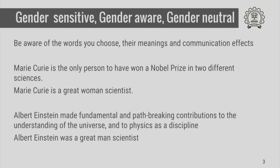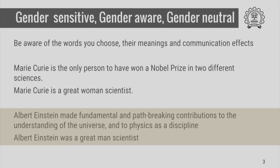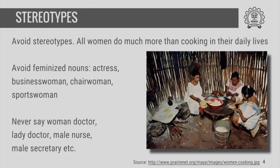Take for example this first sentence referring to Marie Curie, who is one of the few to have won a Nobel Prize in two different sciences. It is possible to say that Marie Curie is a great woman scientist, but why bring in gender at all when we are talking about her research accomplishments? This is a case where we are needlessly bringing in gender where it is not necessary. Nobody ever says that Albert Einstein was a great man scientist. So, referring to a person by her gender when that is not required is to stereotype certain kinds of professions and the work that people do.